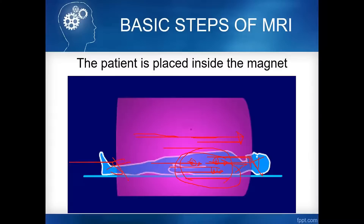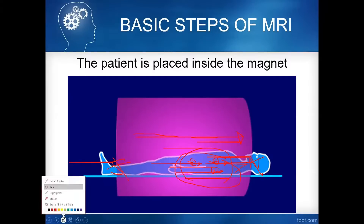So the reason we expose the patient to a strong magnetic field is to align the hydrogen protons in the body. That is the first step of the MRI process.